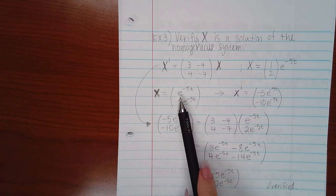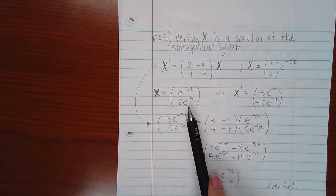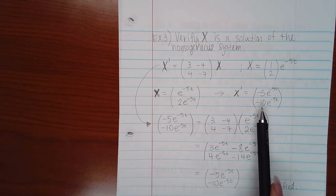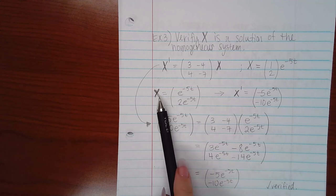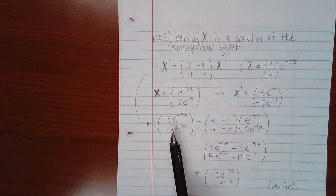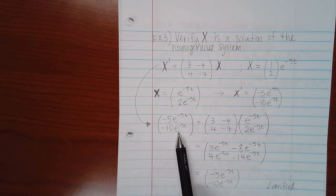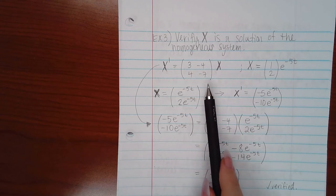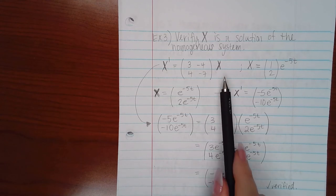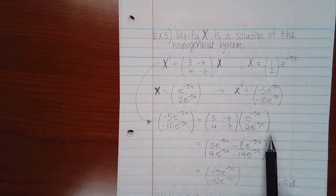Then I used this to find X prime. So what is the derivative of this component? It's negative 5e to the negative 5t. What's the derivative of this component? It's negative 10e to the negative 5t. Then I plugged in X prime and X into the original system that they gave me. So X prime became negative 5e to the negative 5t and negative 10e to the negative 5t. A stayed the same, and X became the X that they gave me, but in my form, e to the negative 5t times 2e to the negative 5t.